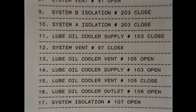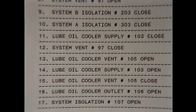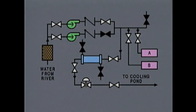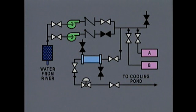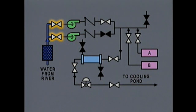Other references, such as valve lineup checklists, are typically used along with the diagram to determine actual valve lineups during specific procedures such as a start up or shut down. This system provides cooling water for several systems in a plant. Water from a river first passes through an intake screen, which traps leaves and other debris. After the water passes through the intake screen, it comes to a section of piping with two valves.